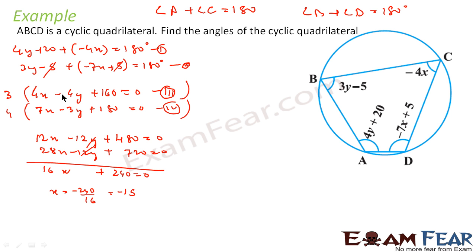Now I can put the value of x in any equation to get the value of y. So I will put it here: 4 into x, that is minus 15, minus 4y plus 160 equals 0. Or I can say y is nothing but 160 minus 60 by 4, that is 100 by 4, that is 25.